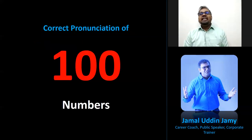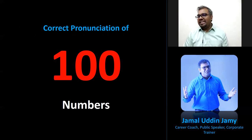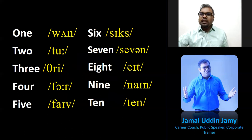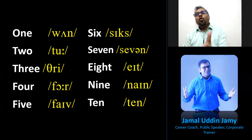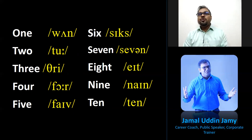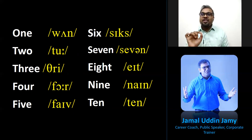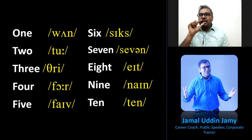Today we are going to learn the correct pronunciation of numbers from one to one hundred, but especially the tricky ones we need to be careful about. Let's start: one, two, three, four. When 'three' comes, your tongue will be in between the two parts of your teeth.